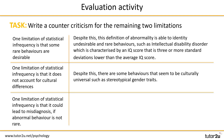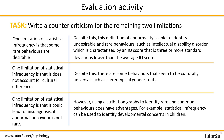Hopefully you were able to come up with some of your own ideas. For the point that starts 'one limitation of statistical infrequency is that it does not account for cultural differences,' our counter — once we get up to that counter opportunity in the burger template — is that despite this, there are some behaviors that seem to be culturally universal, such as stereotypical gender traits. For the last example, 'one limitation of statistical infrequency is that it could lead to misdiagnosis if abnormal behavior is not rare,' however, using distribution graphs to identify rare and common behaviors does have its advantage — for example, statistical infrequency can be used to identify developmental concerns in children.